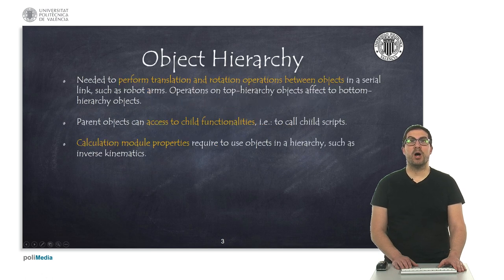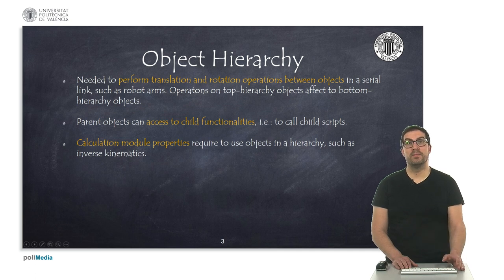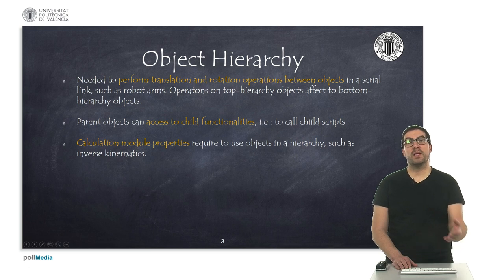The hierarchy between objects is necessary to be able to apply translation or rotation operations on objects in a serial link, as is the case of robots, since the hierarchically superior elements can move the objects that are below. In addition to this, it allows the parent object to access objects that are hierarchically inferior — to access their children — and this can be used, for instance, to read data from a sensor.